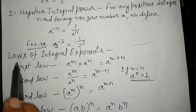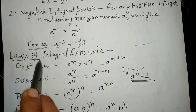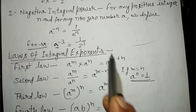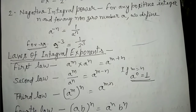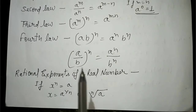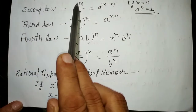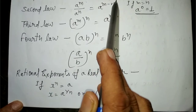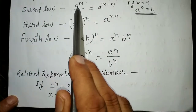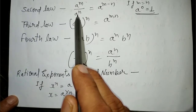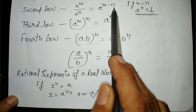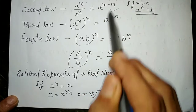इसके बाद में some laws of integral exponents — ये rules/laws दिये गए हैं, इनको लिखना भी है और learn भी करना है। First law: a to the power m into a to the power n is equal to a to the power m plus n. Second law: a to the power m upon a to the power n is equal to a to the power m minus n.